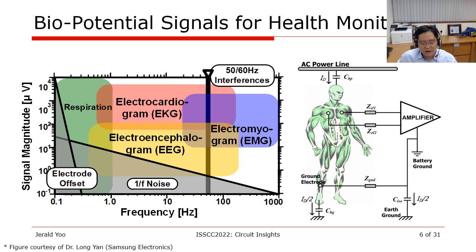Now that you have seen the system-level challenges, let's look at the biopotential signal in more detail. I have shown three exemplary biopotentials: electrocardiogram (EKG) from your heart, electroencephalogram (EEG) from your brain, and electromyogram (EMG) from your muscle. The first thing you'll notice is that the amplitude of these signals is very weak. EEG, for example, is in the orders of microvolt; EKG goes to around millivolt.